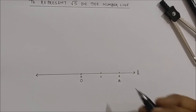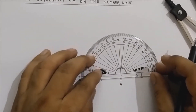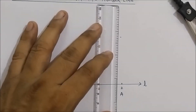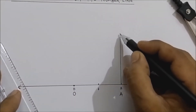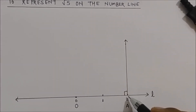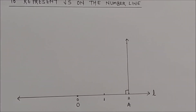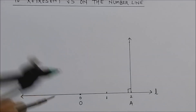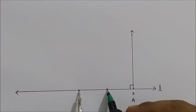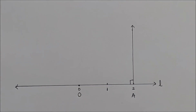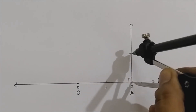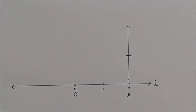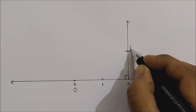Now, at point A, using a protractor, draw a perpendicular — a 90-degree angle. Then take 1 unit distance — the same unit distance from 0 to 1 — and from point A, cut an arc using that 1 unit distance. Name this new point as point B.